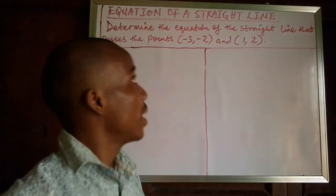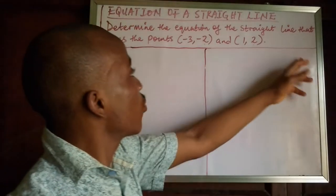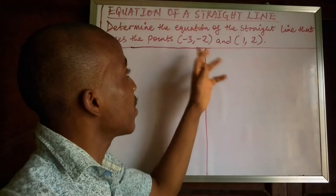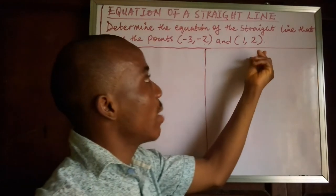Okay, so we are on the second problem, and it says determine the equation of the straight line that passes through the points (-3, -2) and (1, 2).